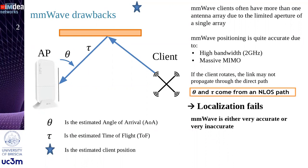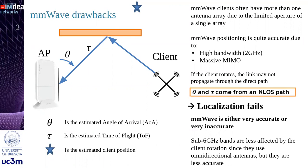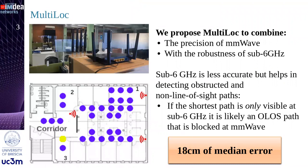On the other hand, sub-6 GHz bands are less affected by client rotation, but localization is less precise. We propose Multi-lock, which combines the accuracy of mmWave with the robustness of sub-6 GHz.